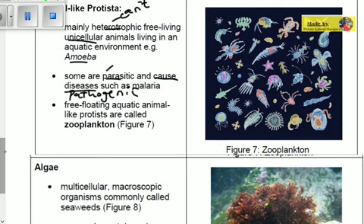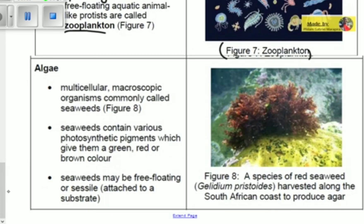Free-floating aquatic animal-like Protists are called zooplankton. To summarize: for plant-like Protists, the other name is phytoplankton; for animal-like Protists, the other name is zooplankton. The third category is algae, which are multicellular macroscopic organisms commonly called seaweeds. Macroscopic is the opposite of microscopic — it means visible to the naked eye. If you go to the sea you can actually see these seaweeds, which is why Protista includes both microscopic and macroscopic organisms.